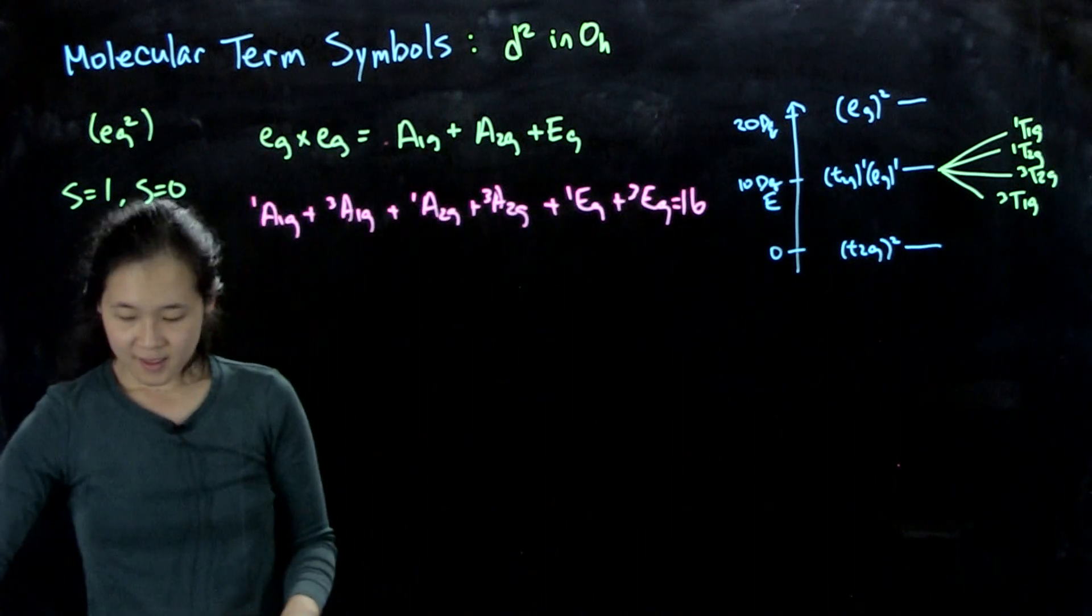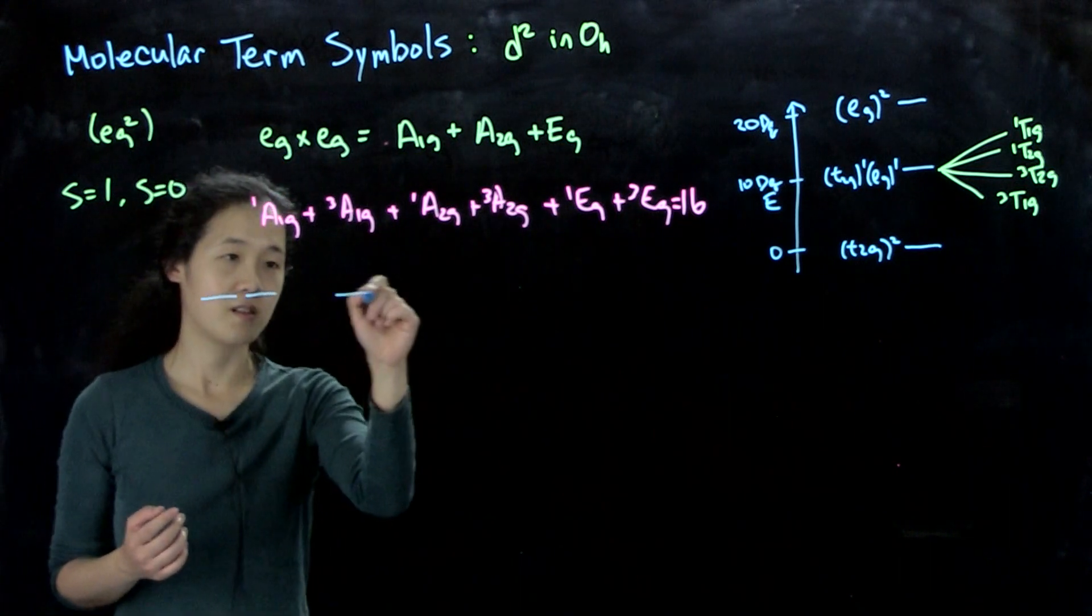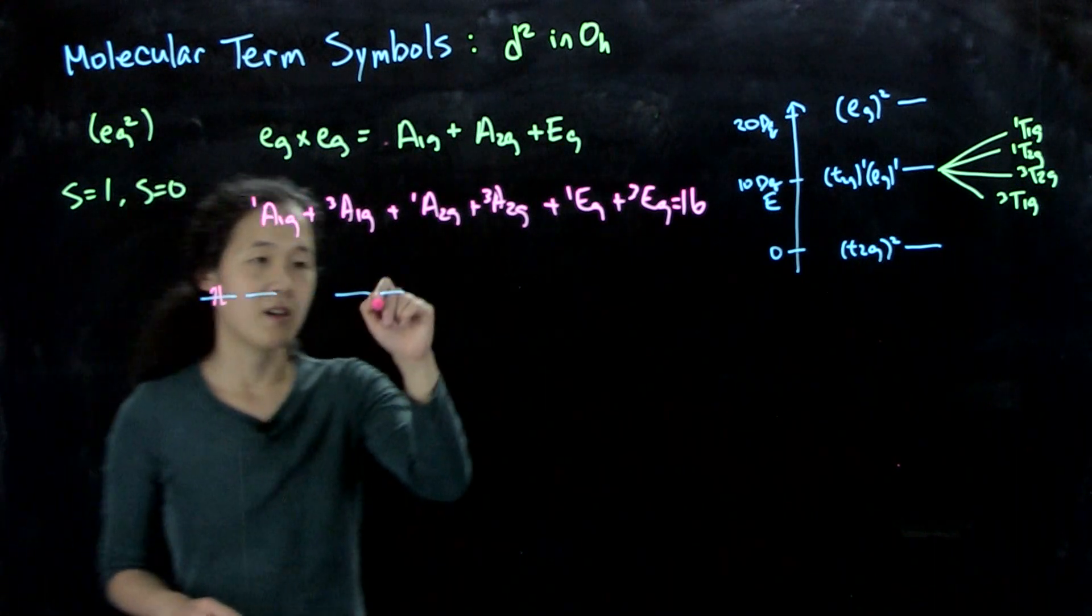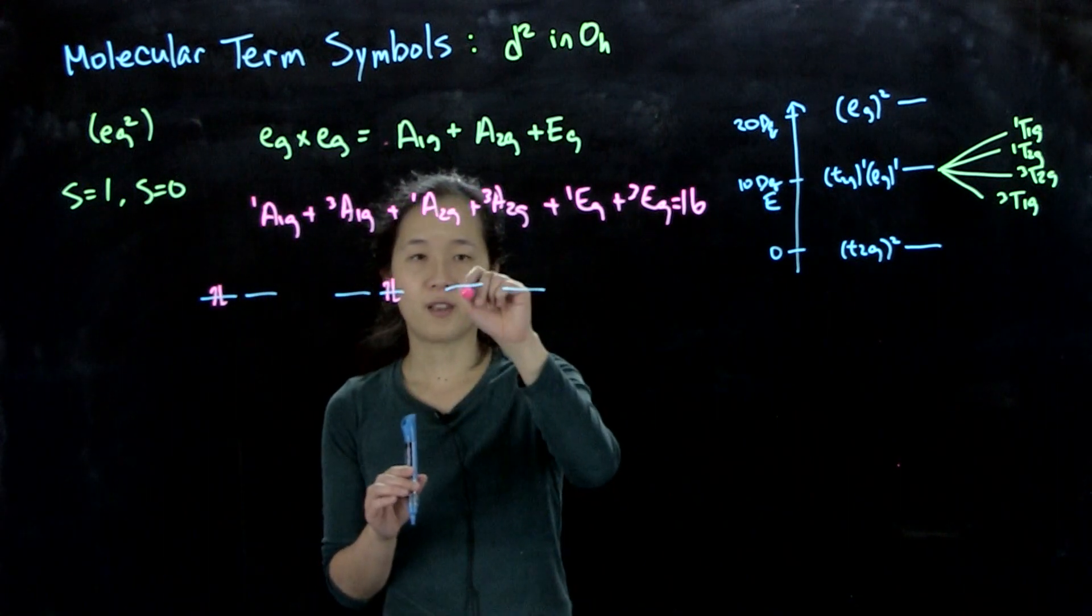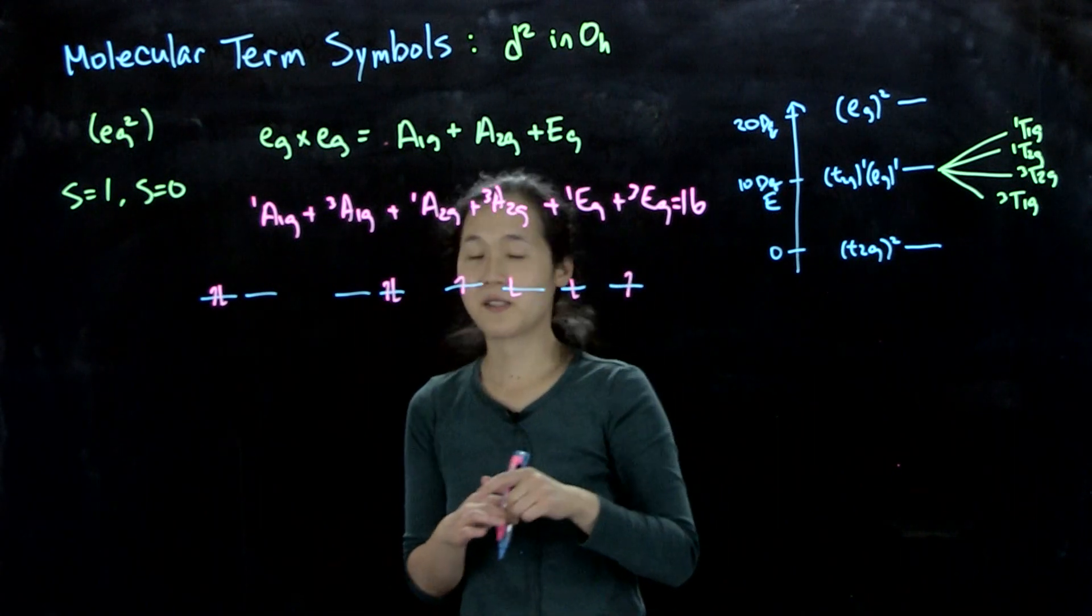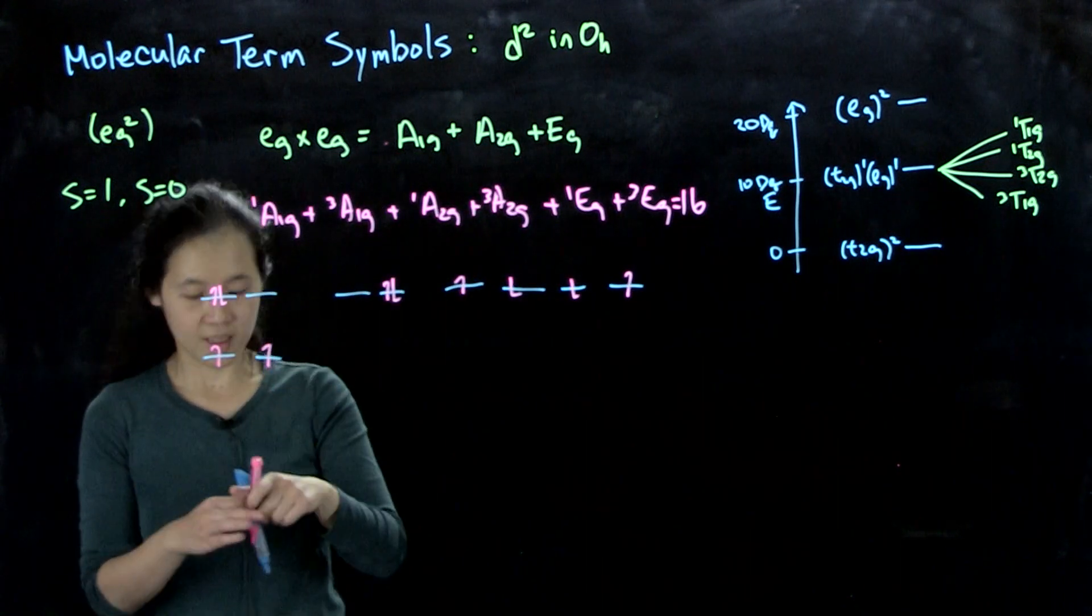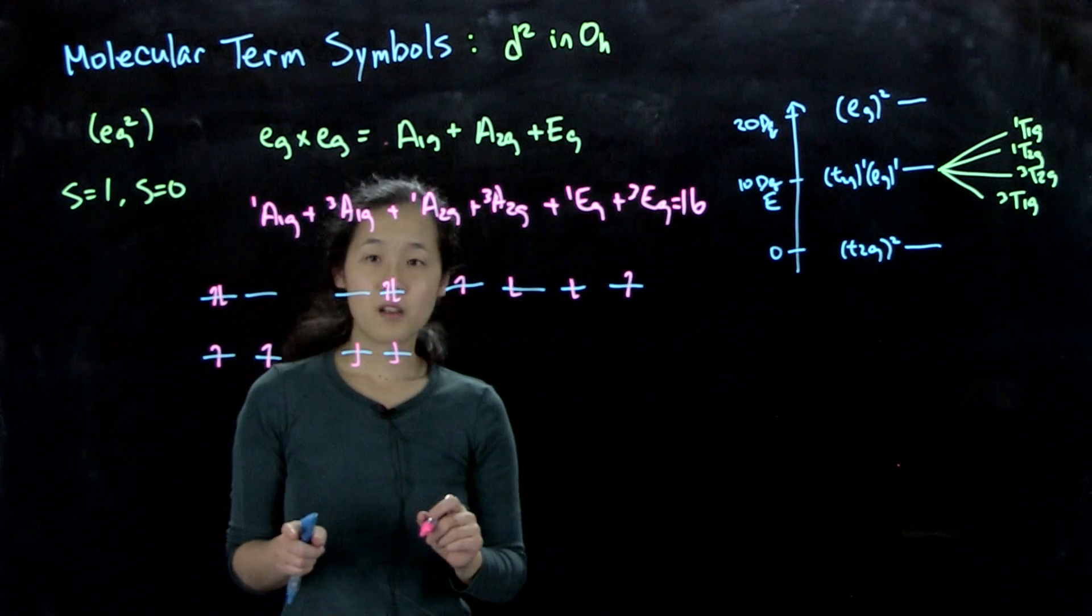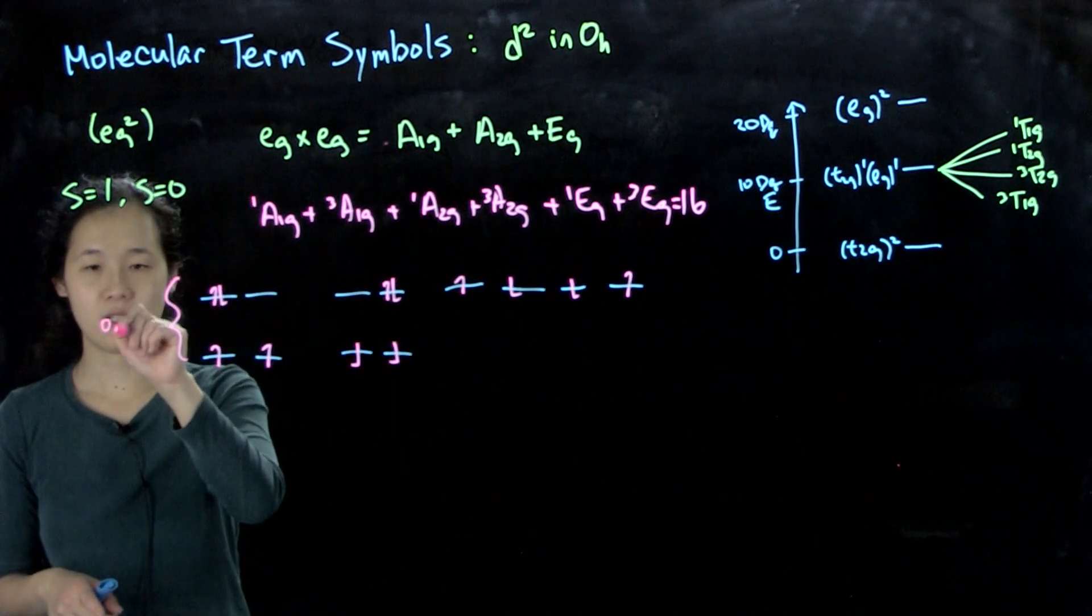But if we actually consider how many ways we can populate an eg orbital with two electrons, so here are my eg orbitals, we could have, let's see, 1 here, we could have 1 here, we could have 1 here, we could have 1 here, those are all our s equals 0 states, and then we could have this triplet state, we could have this triplet state. So overall we actually only have six possible states. Only six.